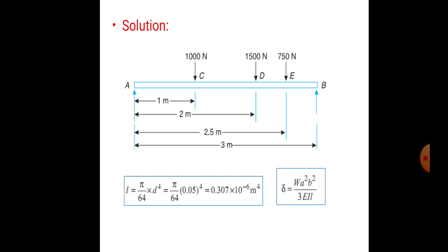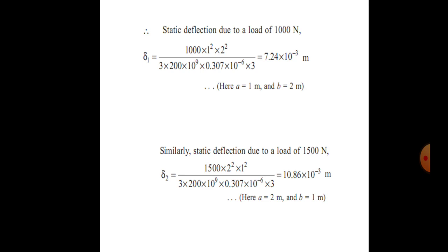The moment of inertia I = π/64 × d⁴ = 0.307 × 10⁻⁶ m⁴. The static deflection formula is δ = Wa²b² / (3EIL). For the static deflection due to the 1000 N load: δ1 = 1000 × 1² × 2² / (3 × E × I × L), giving δ1 = 7.24 × 10⁻³ m, where a = 1 m and b = 2 m.